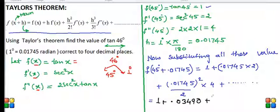1 plus 0.01745 into 2 is approximately 0.0349 plus this value comes out from calculator to be 0.000609, which total is equal to 1.035509.